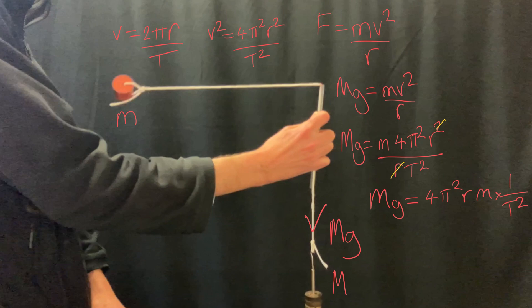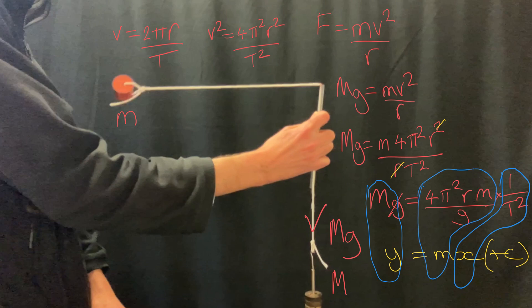I can now divide both sides by g and compare to the equation for a straight line. If I plot big M as my y and 1 over T² as my x, then my gradient should come out as 4π²rm, the mass of the bung, divided by g.